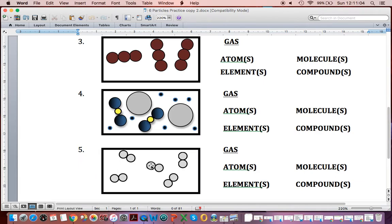You're going to see number five is like number three. I have molecules. These have atoms bonded together. But these are identical atoms that are bonded together, so I circle elements.